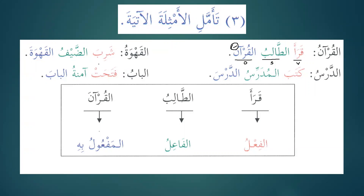Similarly, al-qahwatu — coffee. Shariba al-daifu al-qahwata — the guest drank coffee. Sharibah is the past tense verb, daif is the subject, and al-qahwata is the object. Similarly, kataba al-mudarrisu al-darsa — the teacher wrote the lesson. Al-mudarrisu is the subject and al-darsa is the object.